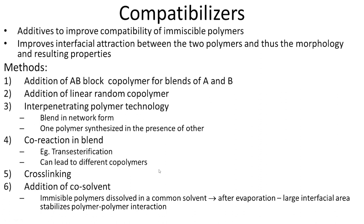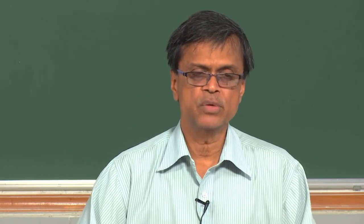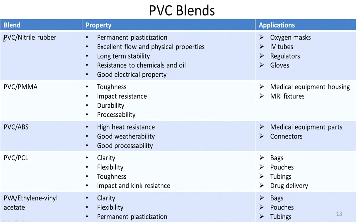Compatibilizers improve the mixing of two polymers. Without good blending, you get a heterogeneous mixture with regions of more A and less B, or more B and less A — which is not desirable. We want uniform macroscopic mixing. For example, PVC blended with nitrile rubber gives permanent plasticization, excellent flow and physical properties, long-term stability, resistance to chemicals and oil, and good electrical properties. This blend is used in oxygen masks, IV tubes, regulators, and gloves, since nitrile rubber provides the flexibility that PVC alone lacks.